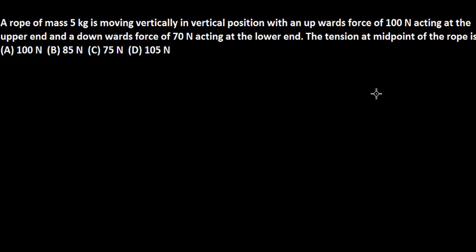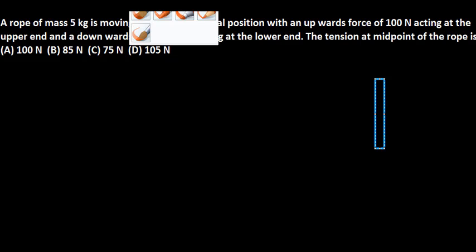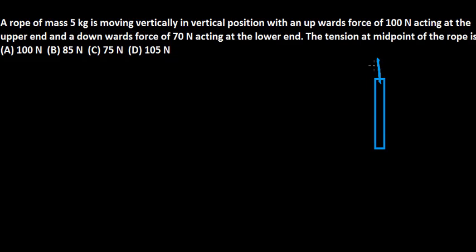So let us make a diagram. This is a rope, it is moving vertically but it is not mentioned in which direction, that we need to find out. There is a force of 100 N in the upward direction and there is a force of 70 N in the downward direction.